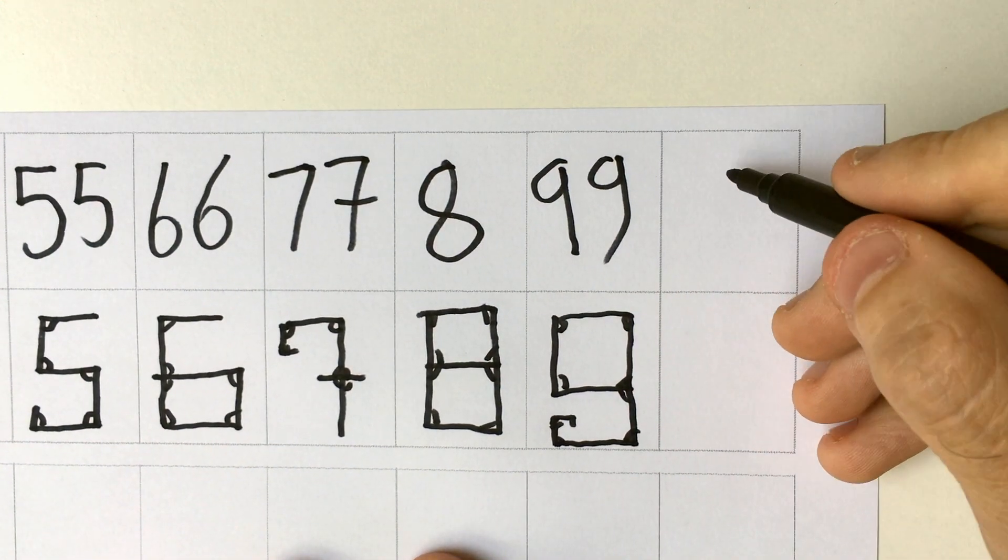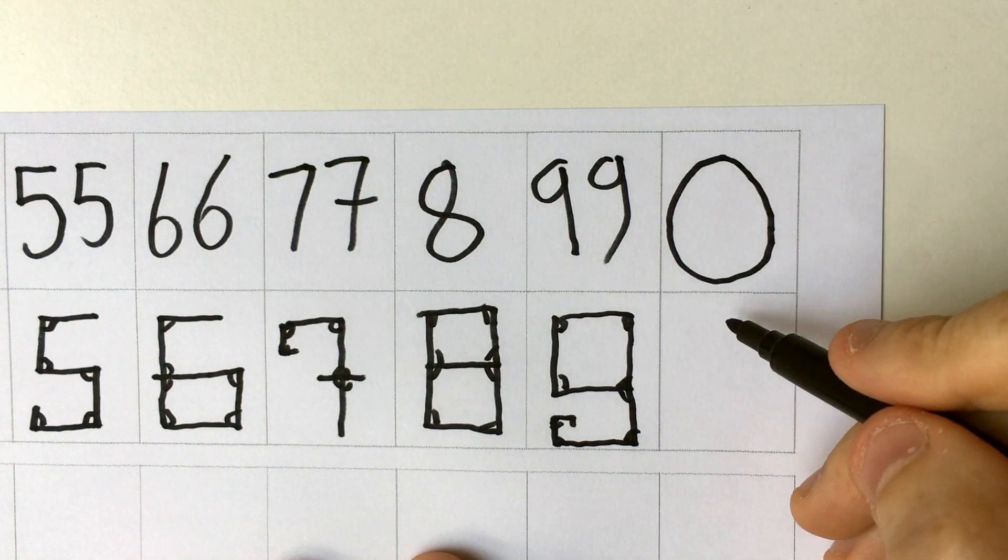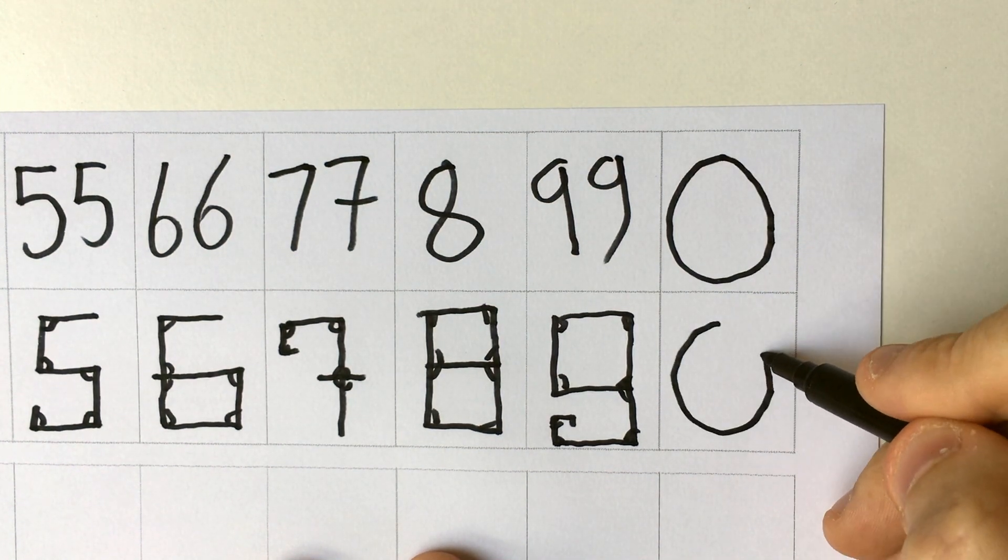And obviously the next one, well in this one, there are no corners. That's why it's a zero.